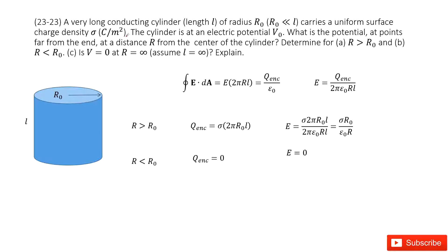In this problem we have a very long conducting cylindrical object. The keyword 'conducting' tells us the charge is distributed at the surface — the charge density is just at the surface — and at the surface the electric potential is V₀. We need to determine the potentials at different locations: first for r larger than r₀, and then inside.